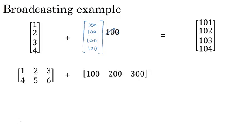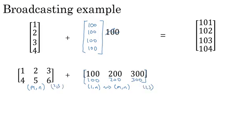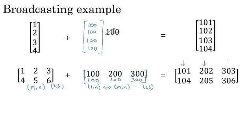Here's another example. If you have a two by three matrix and add it to a one by three matrix, Python will copy the one by three matrix twice to turn it into a two by three matrix, then add element-wise. So you end up adding 100 to the first column, 200 to the second column, and 300 to the third column. This is basically what we did on the previous slide, except we used a division operation instead of addition.